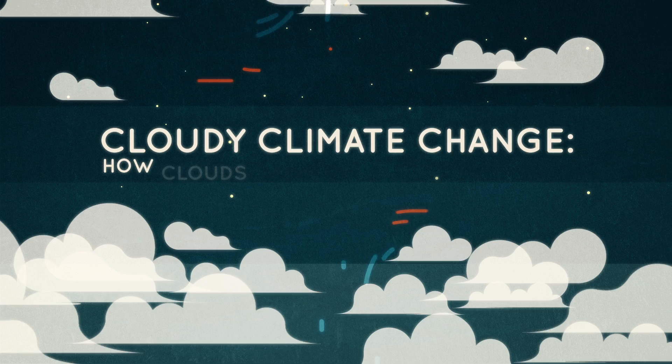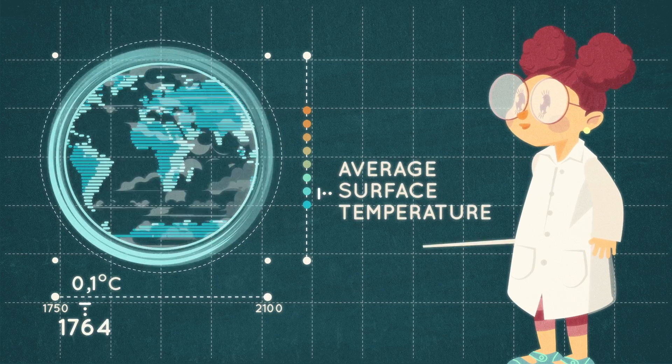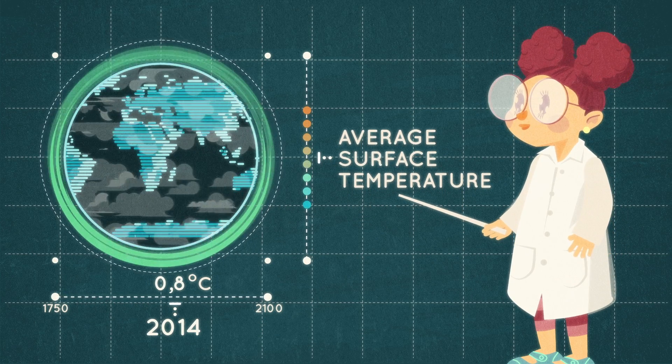Cloudy Climate Change – How Clouds Affect Earth's Temperature. Earth's average surface temperature has warmed by 0.8 Celsius since 1750.